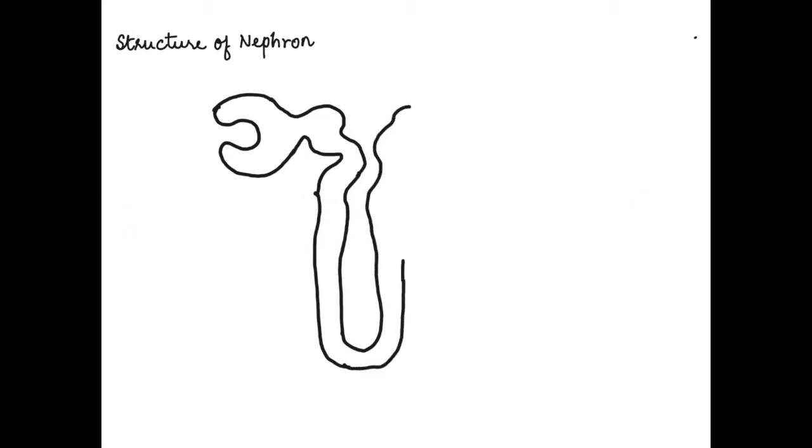We start by drawing the loop, then the tubules and the connections. This is a quick representation of the nephron that is not very detailed, but it helps you understand the parts.